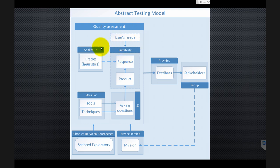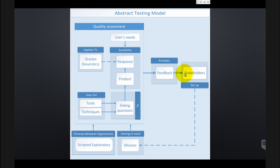After all this process of quality assessment, the tester generates feedback. Feedback can be anything — it can be a yes/no answer, which is not the best feedback, but it can be. Most of the time it will be some kind of story about what you gained from the evaluation. Then you provide it to the stakeholders.